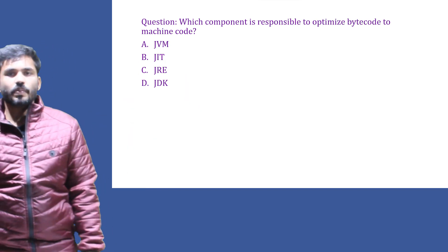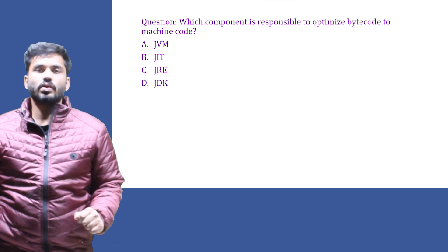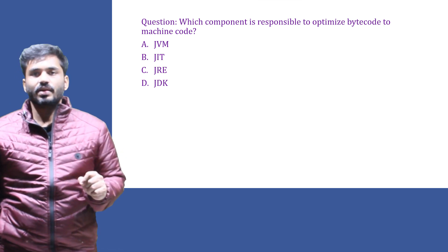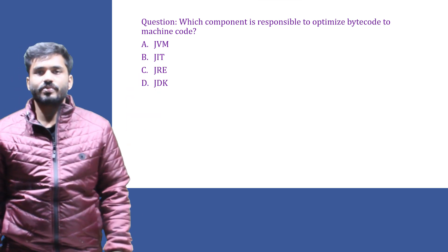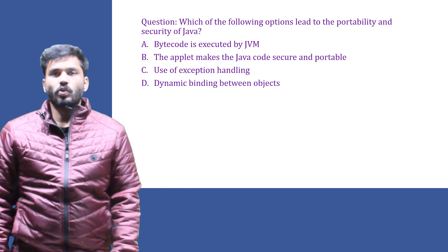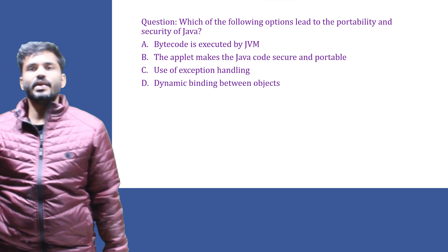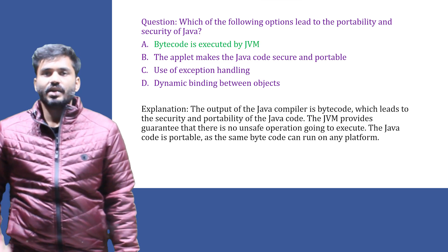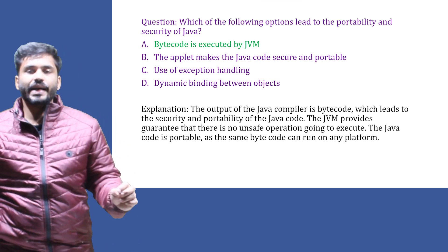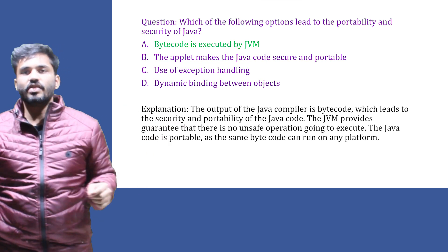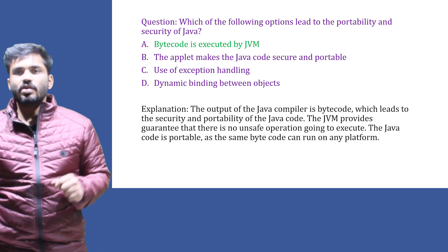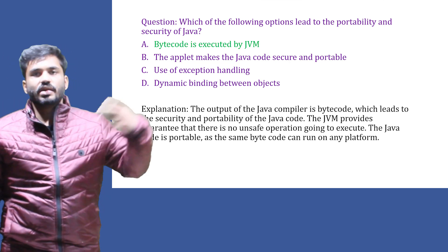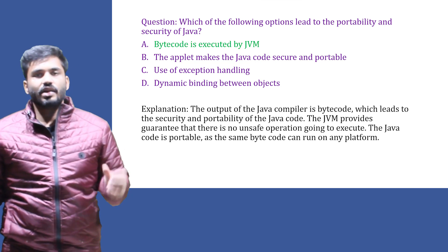Which component is responsible for optimizing bytecode to machine code? JIT — Just In Time compiler — is a component inside the JVM responsible for that optimization. Which of the following leads to portability and security of Java? For portability, bytecode is created and runs on the JVM — if a computer has a JVM it can run bytecode from any machine. For security, the JVM runs code inside itself so the code does not interact with the operating system directly.